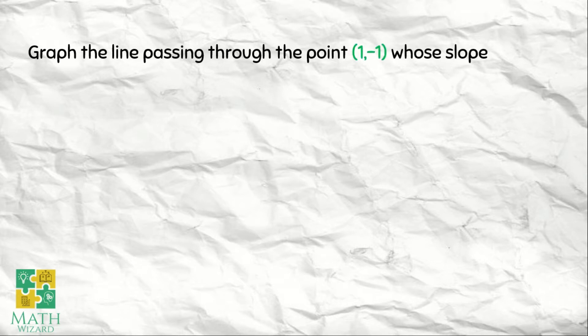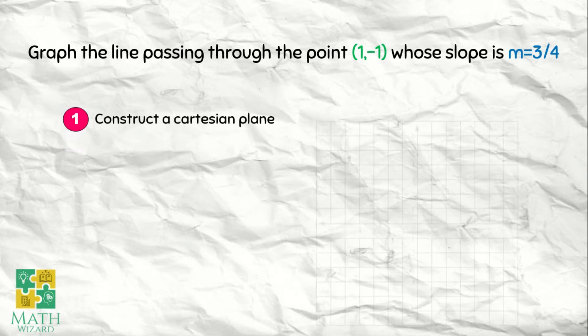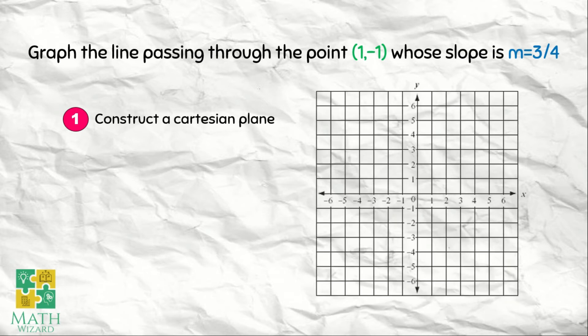We have our first example. Graph the line passing through the point (1, -1) with a slope of 3/4. The first step is for us to construct a Cartesian plane. Ayan, meron na tayong Cartesian plane.